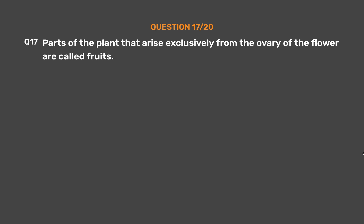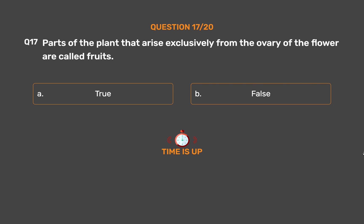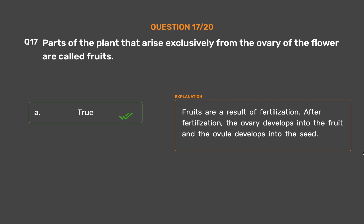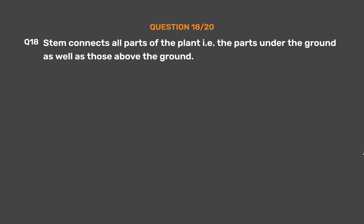Question 17 (True or False): Parts of the plant that arise exclusively from the ovary of the flower are called fruits. Option A: True, Option B: False. The correct answer is Option A, True. Fruits are a result of fertilization. After fertilization, the ovary develops into the fruit and the ovule develops into the seed.